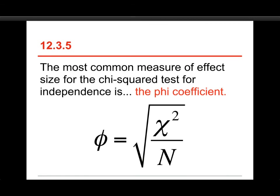And here's its formula. The nice thing is, if you've calculated chi-squared already, you just divide by the sample size and take the square root, and you've got phi. Phi is a version of the correlation coefficient, and it's interpreted the same way.